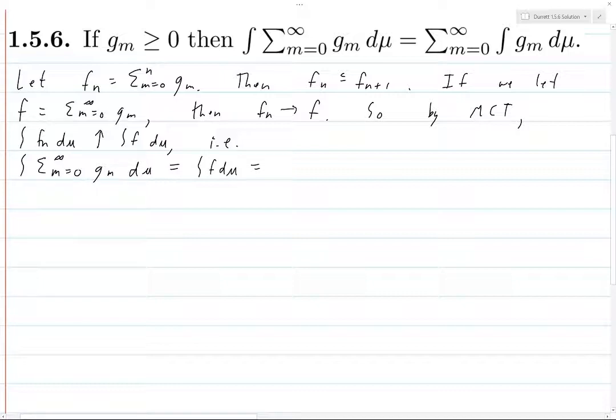which is the limit as n goes to infinity of the integral of the sum from m equals zero to n of g_m dμ.